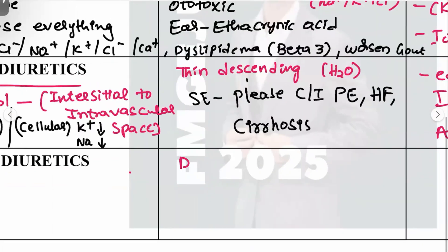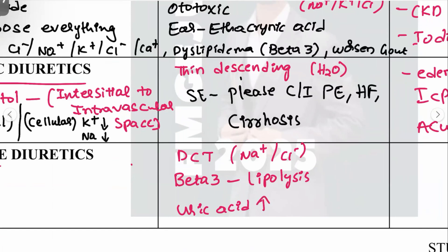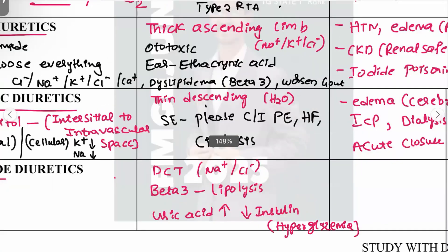Thiazide diuretics act at the distal convoluted tubule (DCT), primarily inhibiting sodium and chloride channels. They also act on beta-3 receptors causing lipolysis, leading to hyperlipidemia. Compensatory uric acid exchange worsens gout (hyperuricemia), and decreased insulin secretion causes hyperglycemia. The pronounced side effects are hyperlipidemia, hyperuricemia, and hyperglycemia.